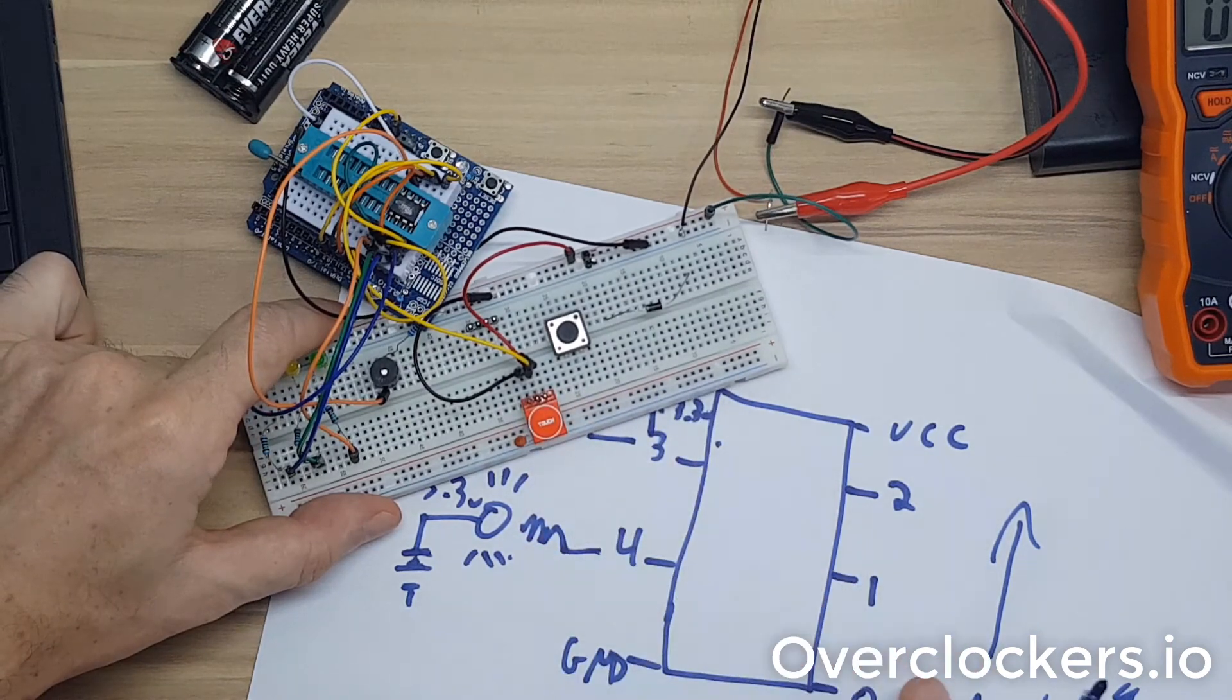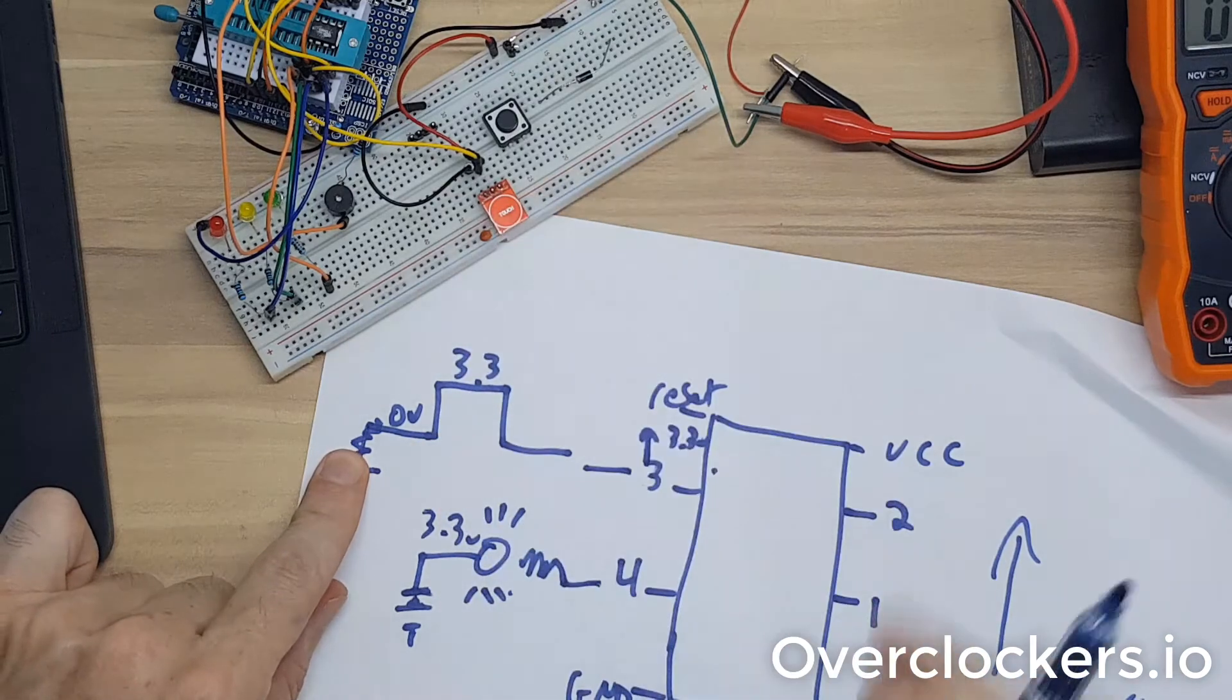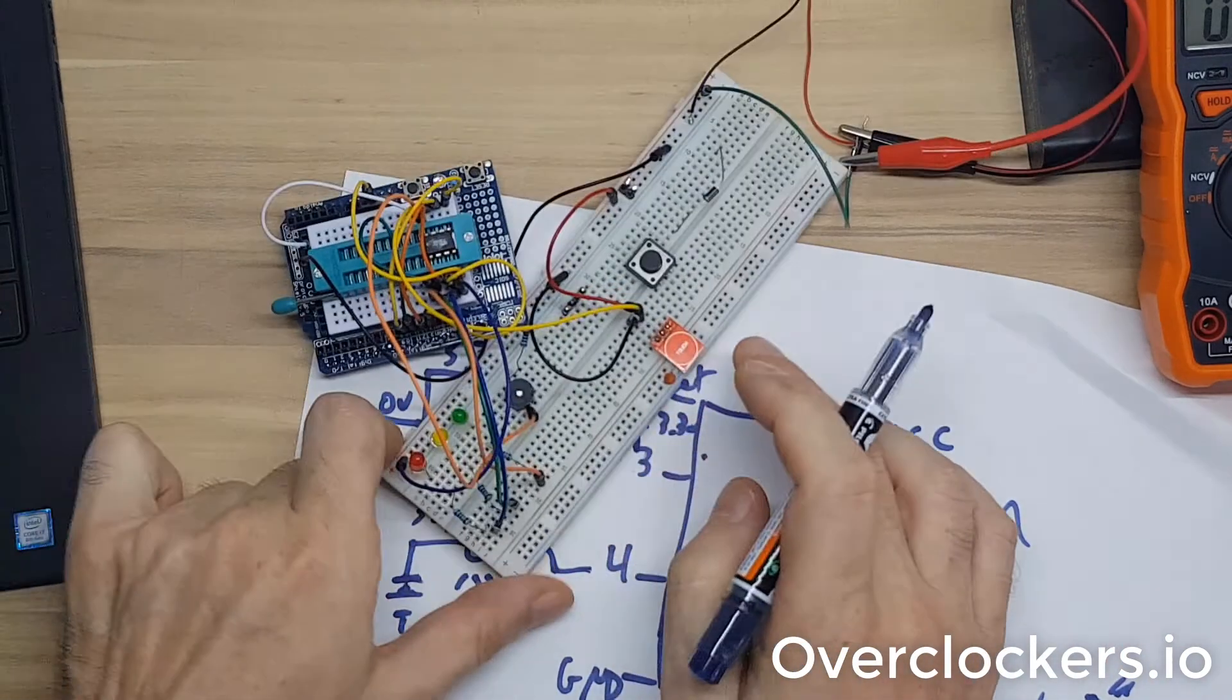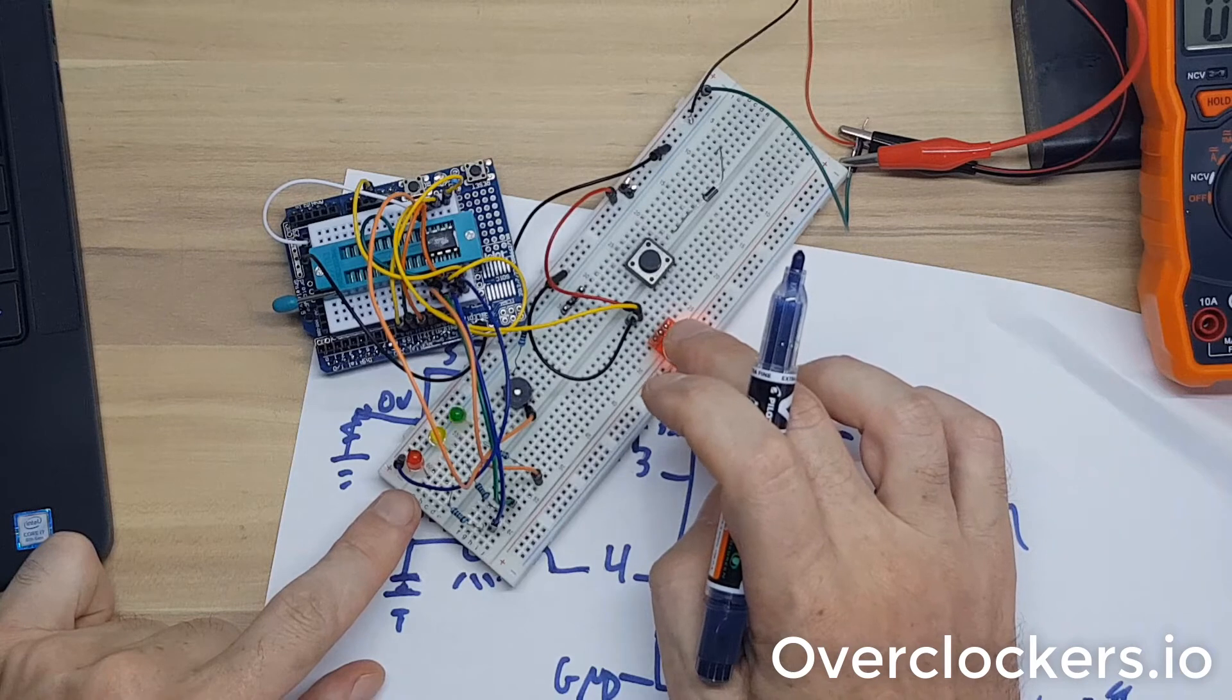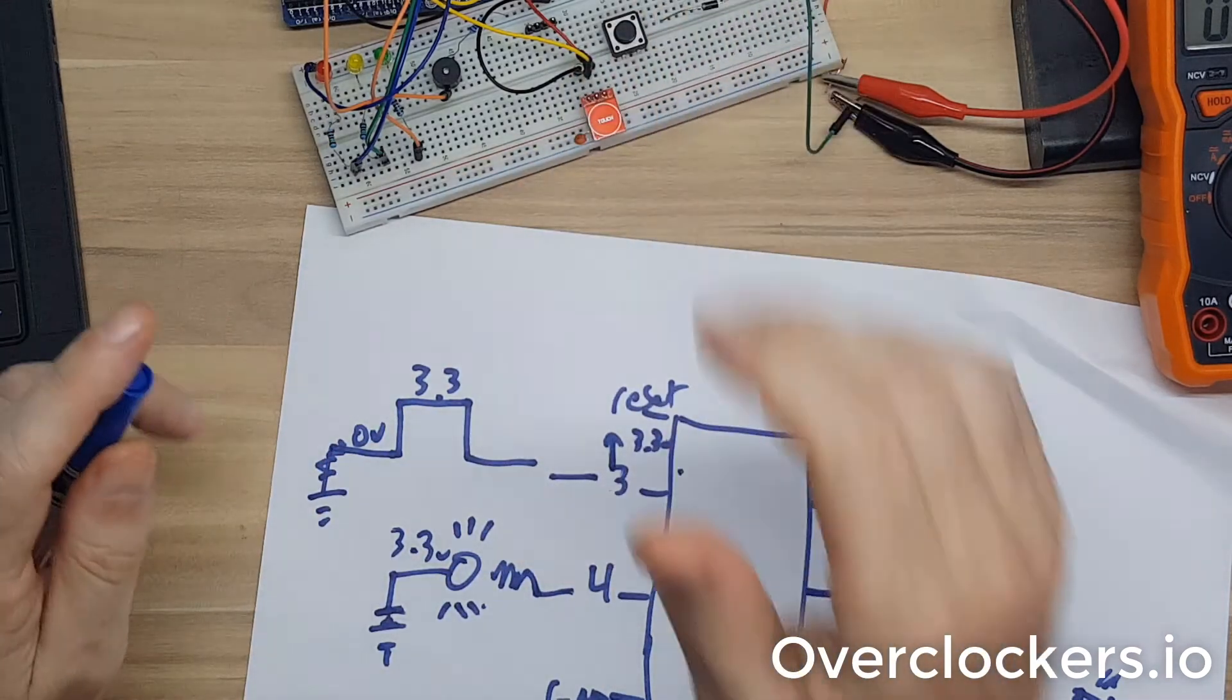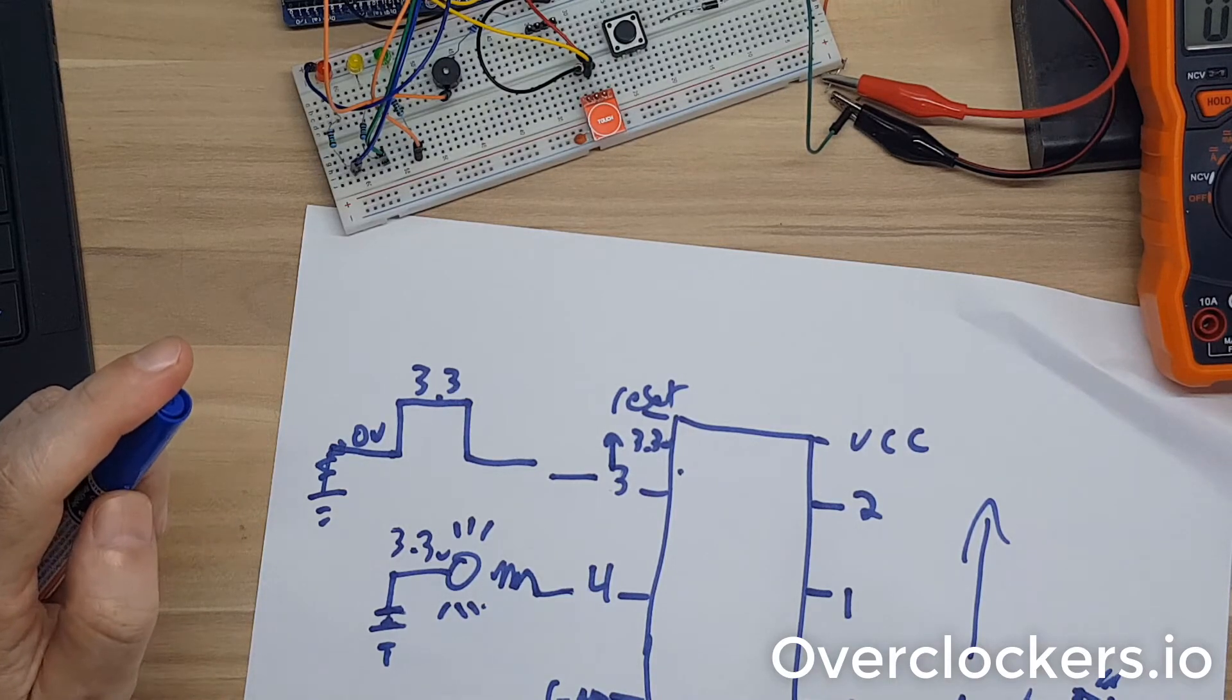When you touch it, it'll bring it up to high. I have a couple of interrupts running. One interrupt checks if it's been touched while it's running. If it goes from high to low, that interrupt will make it go into sleep cycle. The other interrupt runs when it's in the actual sleep cycle. It interrupts the sleep cycle and continues the instructions of the code. That's why it will continue the song rather than resetting it.